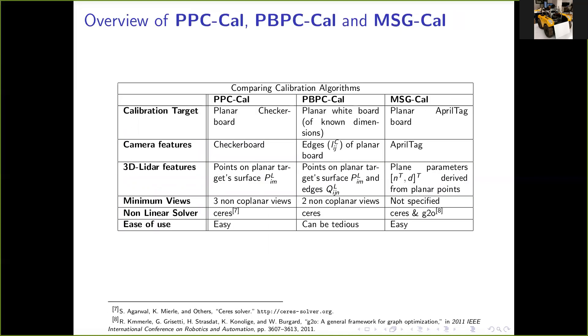The table here presents a theoretical comparison of the three methods. PPC-Cal uses a planar checkerboard, PBPC-Cal uses a planar whiteboard of known dimensions, and MSG-Cal uses a planar AprilTag board. For feature detection in camera, PPC-Cal detects a checkerboard pattern on a planar target. PBPC-Cal detects the edges of the planar whiteboard, and MSG-Cal detects an AprilTag pattern on a planar target. For feature detection in LIDAR, PPC-Cal detects the points on the target surface. PBPC-Cal detects the points on both the surface and its edges. MSG-Cal also detects the points on the respective target surface, but it does not use those points explicitly, and rather derives planar parameters n and d from these points, and uses those parameters to represent the observed planar points.